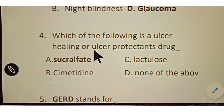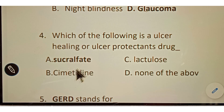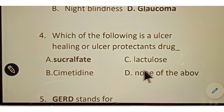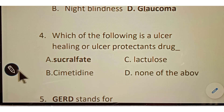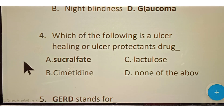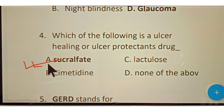Question number four: which of the following is an ulcer healing or ulcer protectant drug? Options given: A. Sucralfate, B. Cimetidine, C. Lactulose, D. None of the above. The correct answer is option A, Sucralfate. Sucralfate is an ulcer healing agent or ulcer protectant.